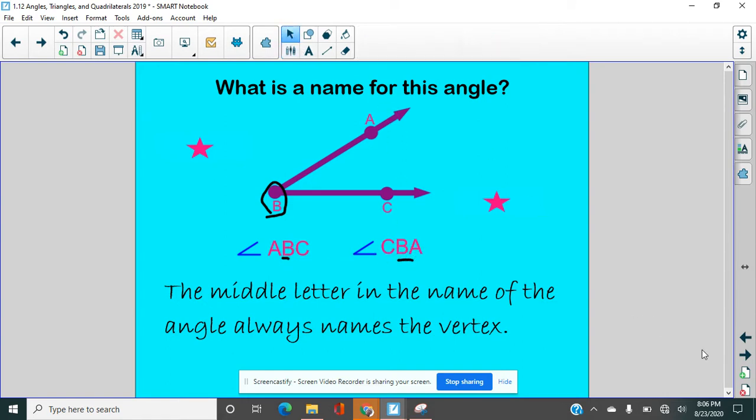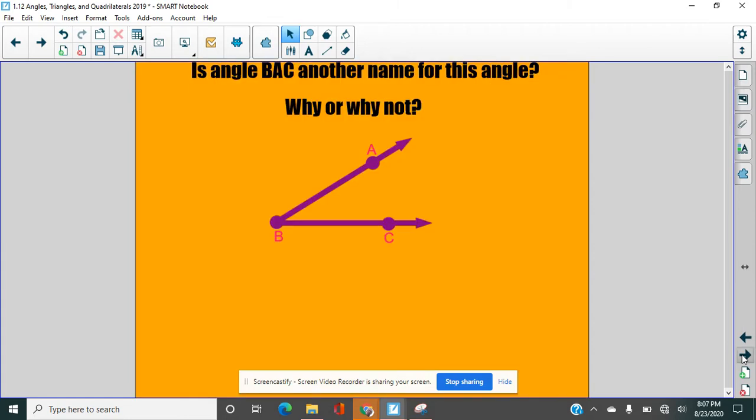You can see that the point, the vertex, this corner point is always the middle letter when you are naming an angle. Always, always, always. And angle names have three letters. Remember, when you're naming a ray or a line segment or a line, you only use two letters. When you use three letters, you are naming an angle. So, can we name this B, A, C? What do you think? Can we name it that? No, we cannot. Because B, A, C does not work. You can't start at the vertex. This is either angle A, B, C, or C, B, A. Not B, A, C.